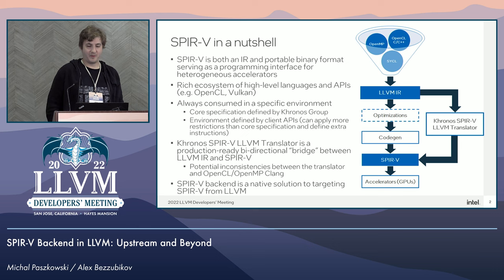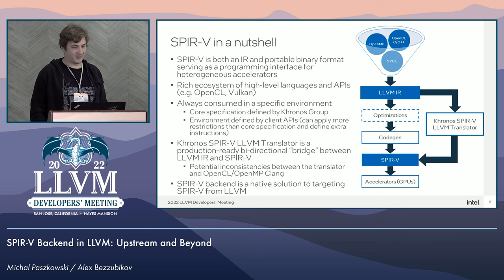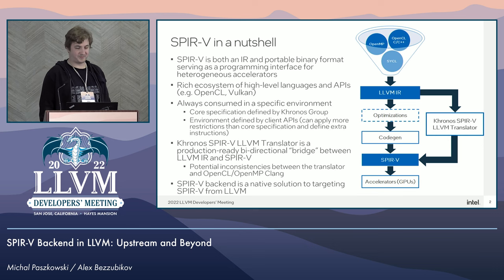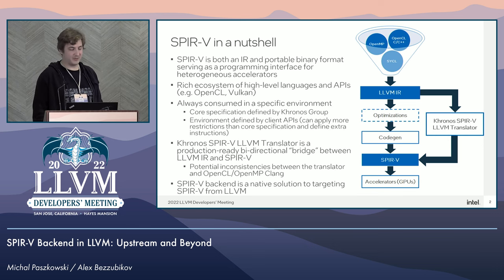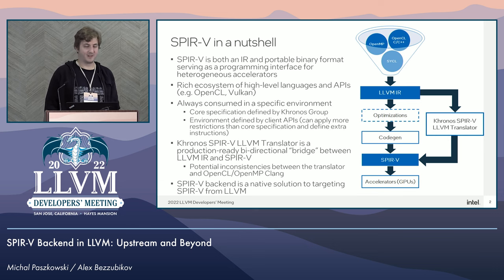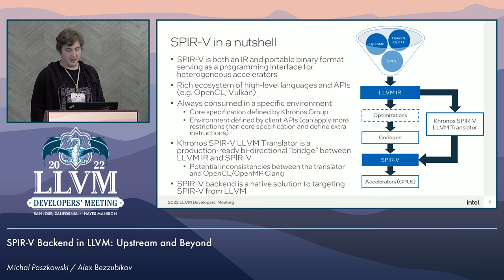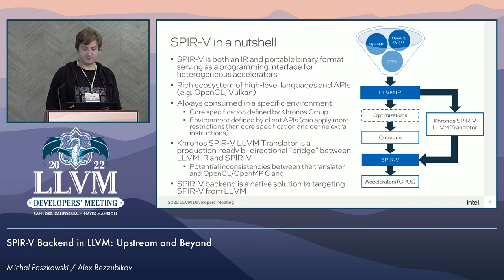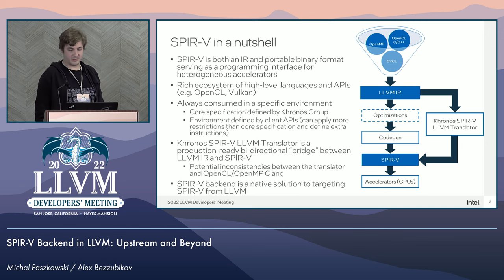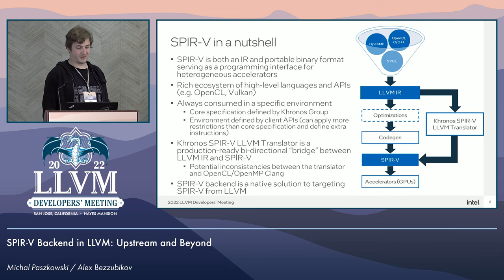Let's start with a quick overview of SPIR-V and its ecosystem. SPIR-V is an IR and a portable binary format serving as a programming interface for Khronos accelerators mostly. SPIR-V is targeted by various languages and APIs, for example OpenCL and Vulkan, both from the 3D and compute side. SPIR-V core specification is defined by the Khronos group.